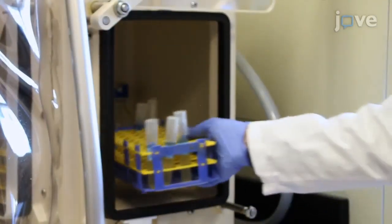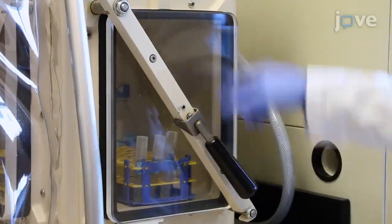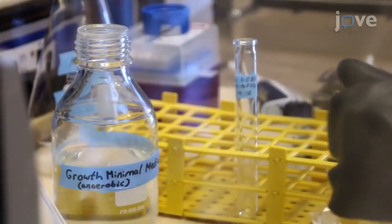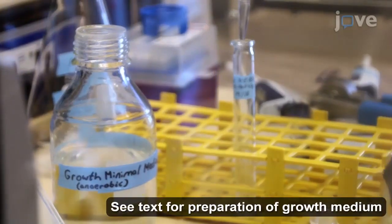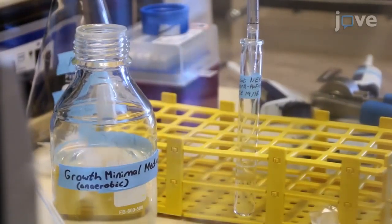At between 9 and 10 a.m. the next morning, bring the culture as well as the previously prepared growth medium into the anaerobic chamber. Then add 8 milliliters of fresh growth medium and 210 micrograms per milliliter of ampicillin into a sterile bulge tube.